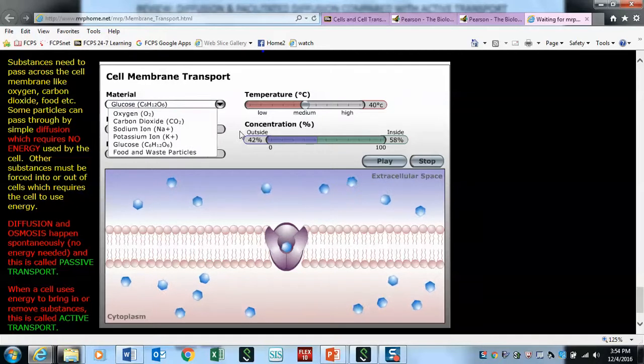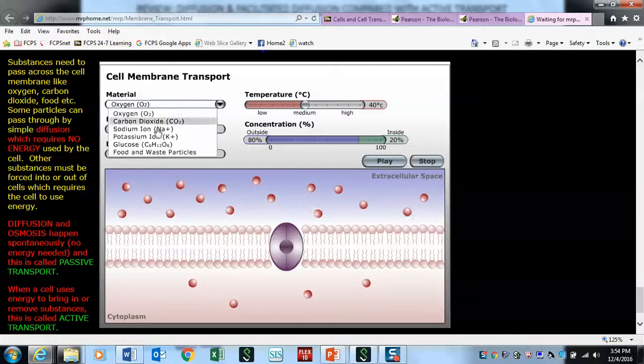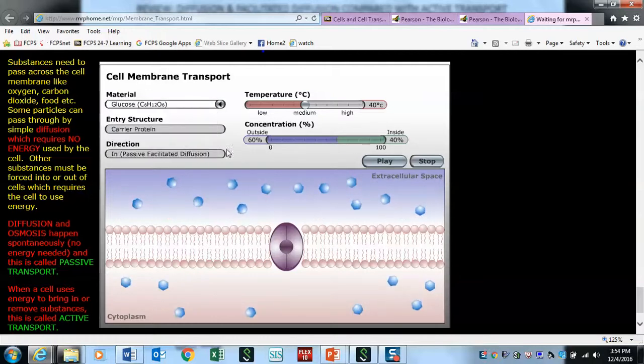You'll notice for oxygen, it said passive diffusion. For glucose, it says facilitated diffusion right here, and it uses the carrier protein.